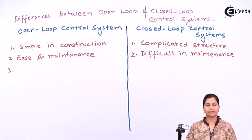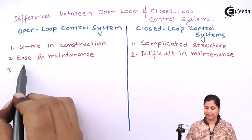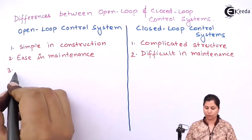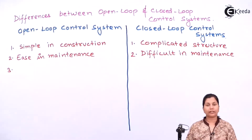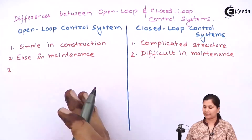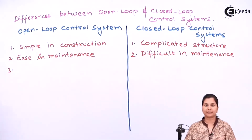The third difference is that, as open loop systems are simple and easy to maintain with few elements involved, they will be cheap. Whereas the closed loop control system, as it has many elements, it will be expensive.